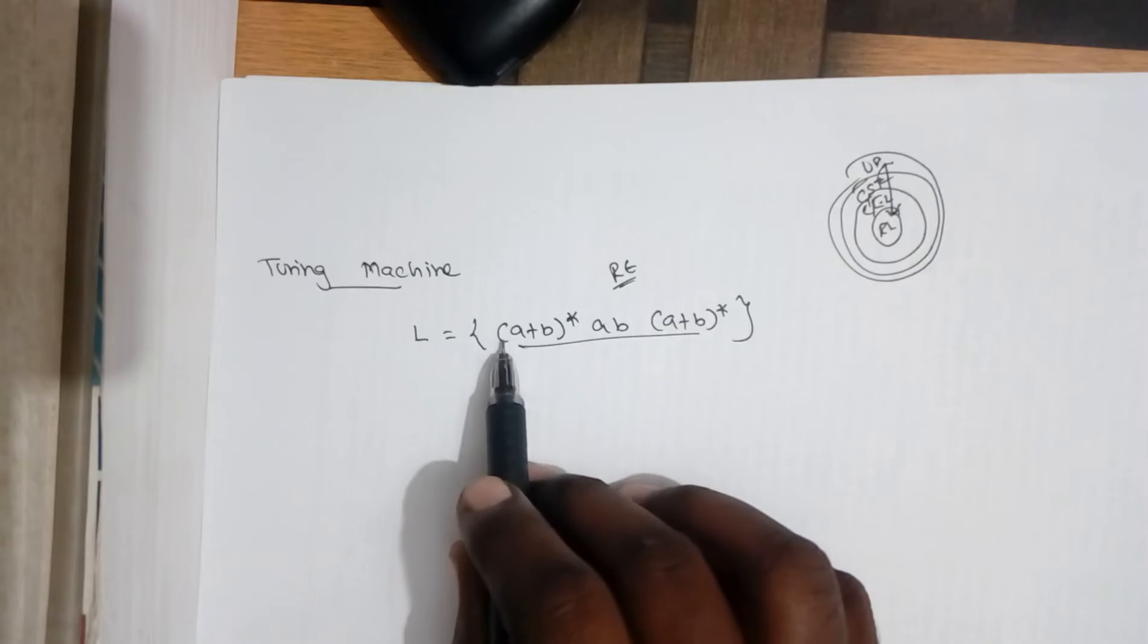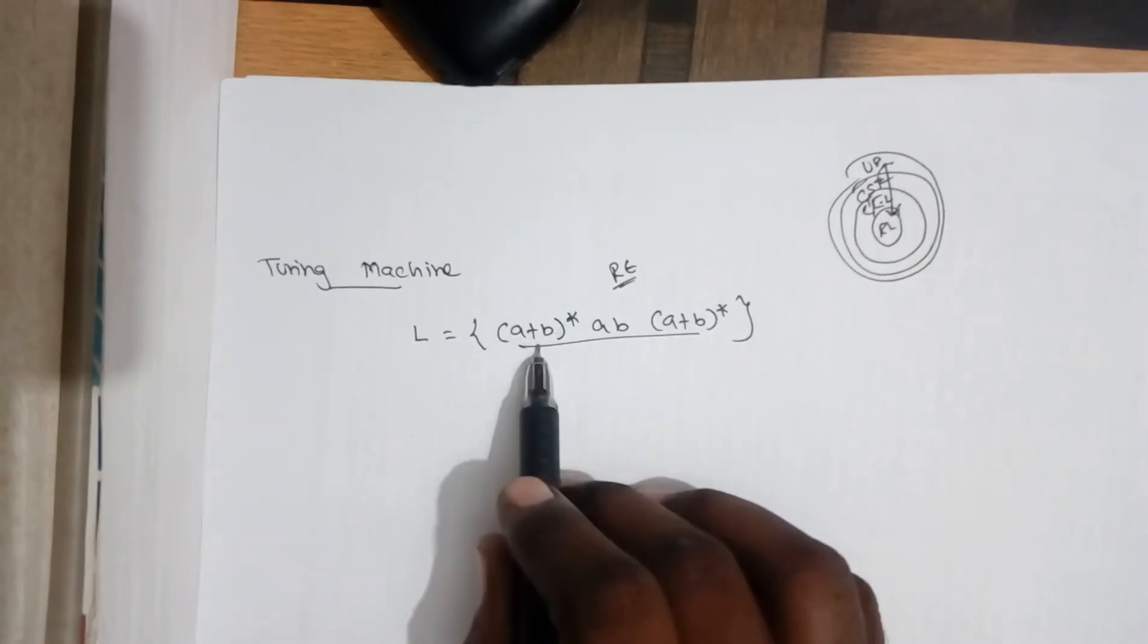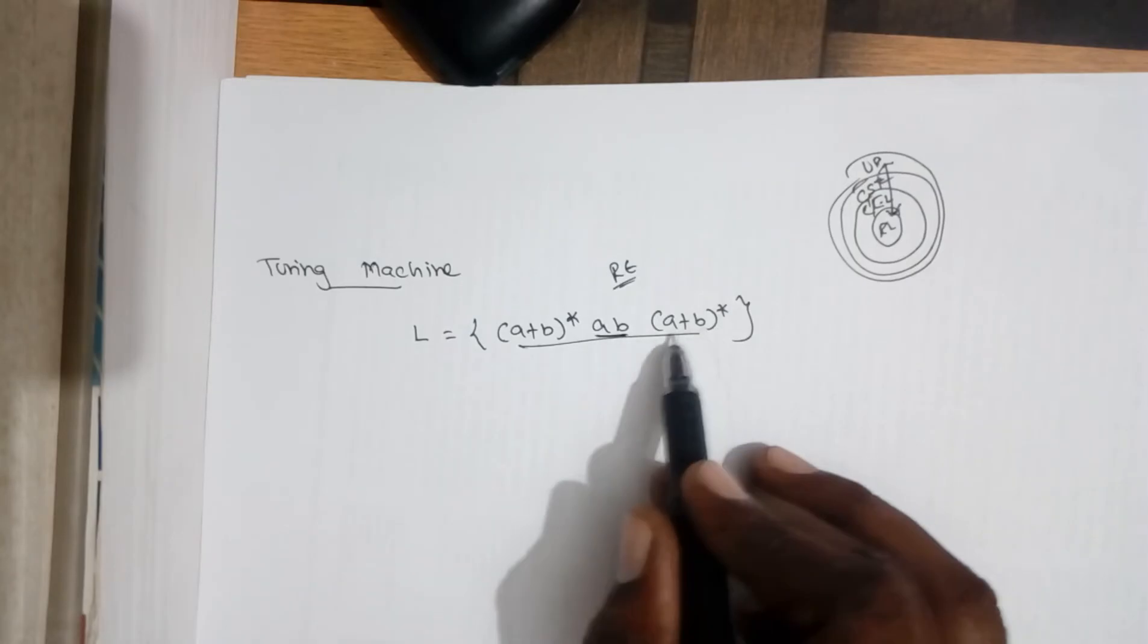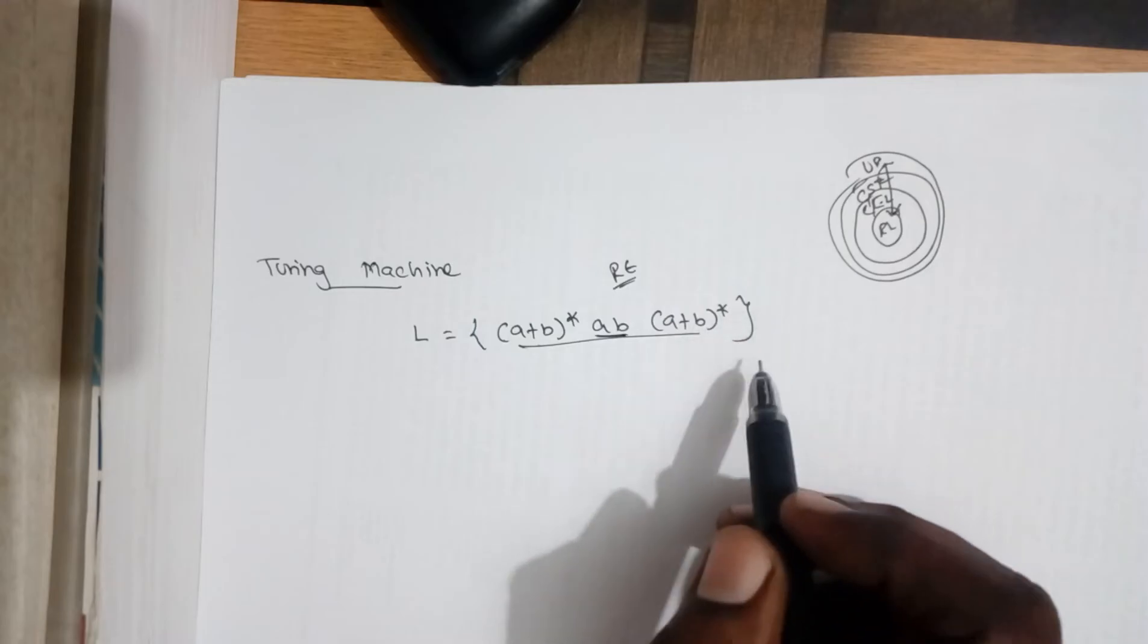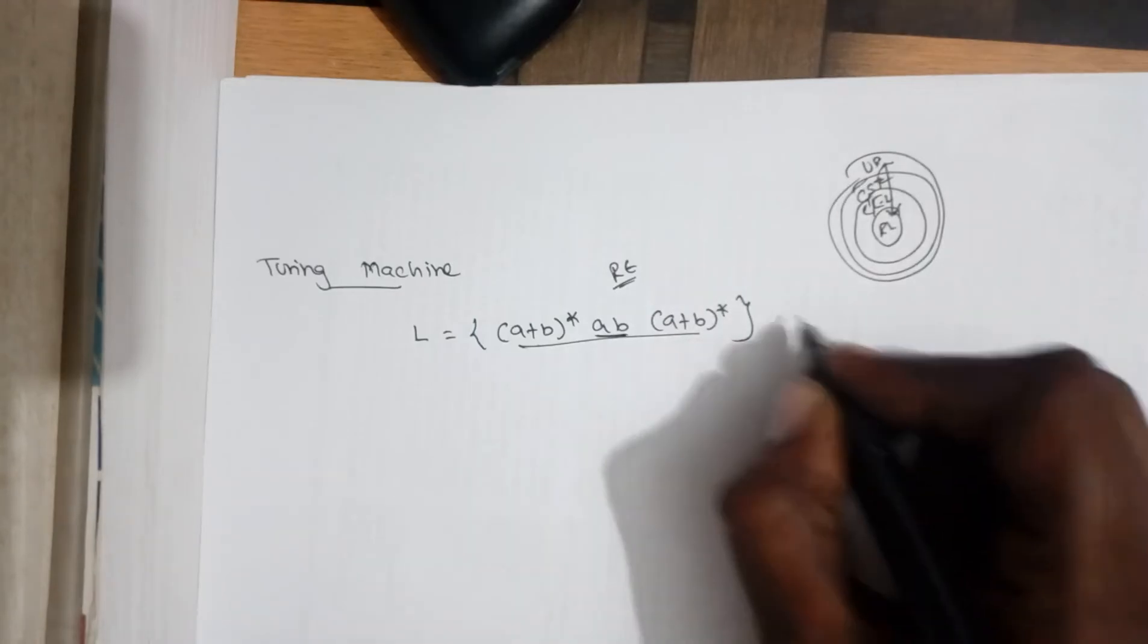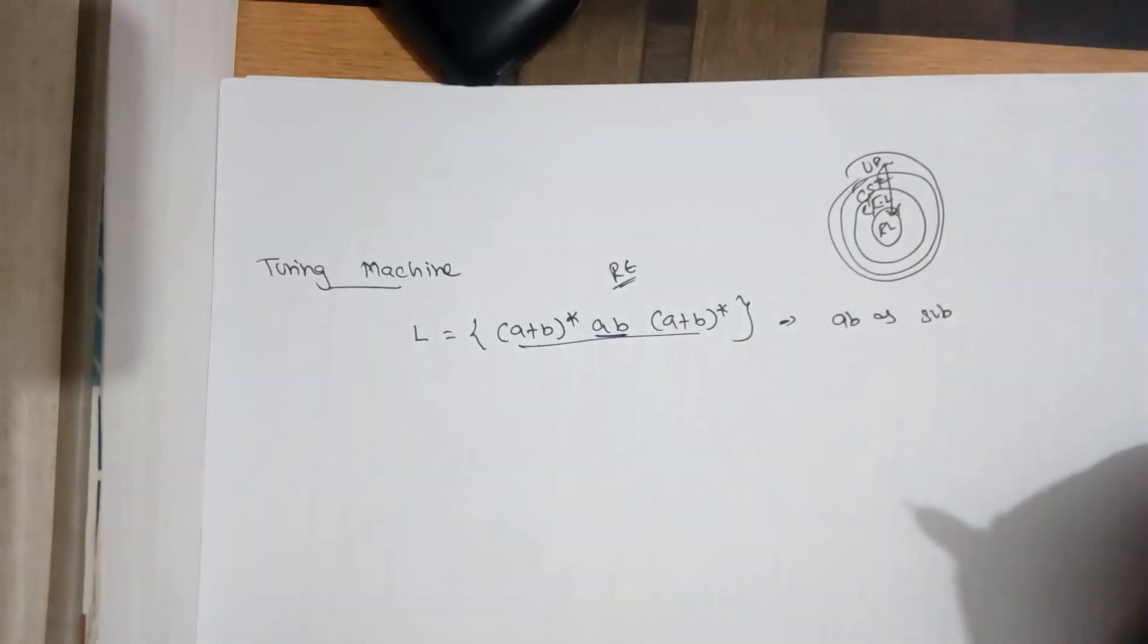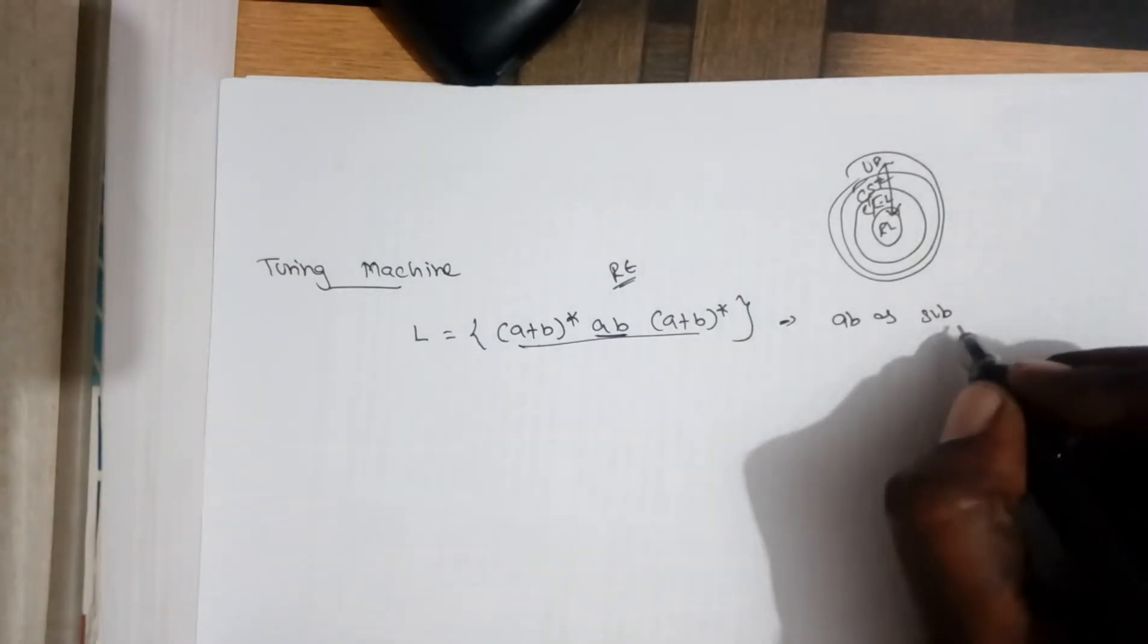So this actually describes either A or B, (A+B)*, 0 or more combinations of A, B, and it is followed by A, B - exactly A, B - and it ends with 0 or more A or B. So this actually describes the language contains A, B as substring. The input is made up of A and B combination and it has A, B as a substring.